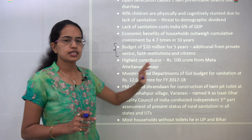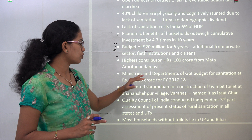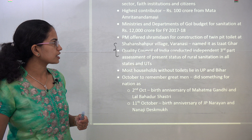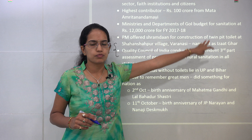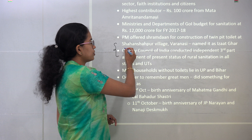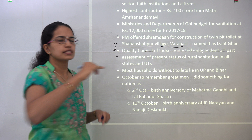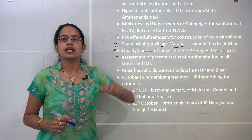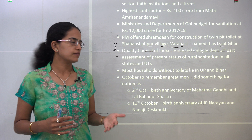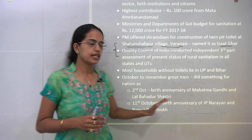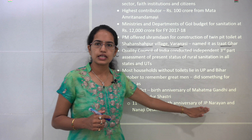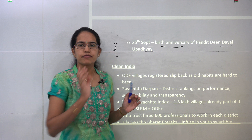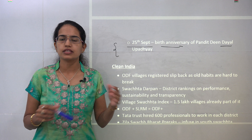Talking about the economics of investing in Swachhata — open defecation has led to problems of diarrhea, child mortality, and issues of dignity. We have nearly 1 lakh preventable deaths that could be managed by creating proper sanitation facilities. 40% of children are physically and cognitively stunted due to lack of sanitation. A budget of $20 million for 5 years has been allocated, with the highest contribution coming from Mata Amritanandamayi with a 100 crore donation. So far, 12,000 crore has been kept as a budget for 2017–18.